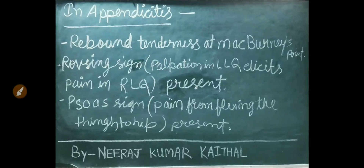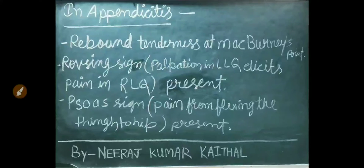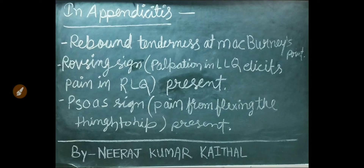In appendicitis, three important points to remember for diagnosis: First, appendicitis is the inflammation of the appendix. Rebound tenderness at the McBurney's point is present. Rovsing's sign is present — palpation in the left lower quadrant elicits pain in the right lower quadrant. Psoas sign is also present — pain from flexing the thigh at the hip.